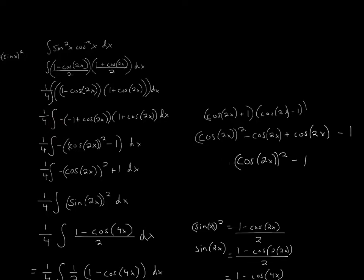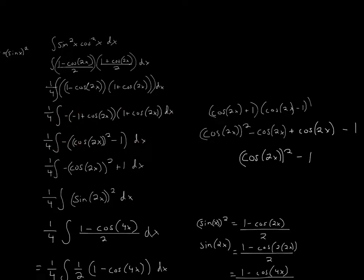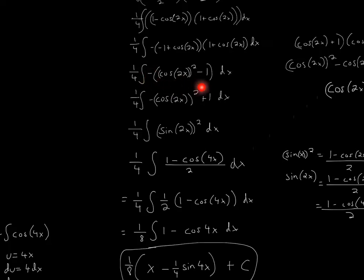And remember that the negative is on the outside of all of this, so the negative sign remains. Then what you can do is multiply the negative throughout the equation. So then it would become negative cosine 2x squared, and then negative times negative would just be positive 1.